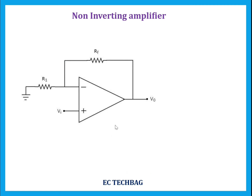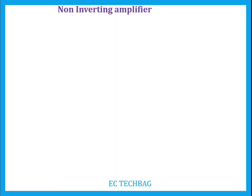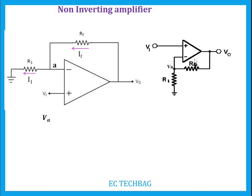Next, let us derive the output expression for this non-inverting amplifier. You can redraw this circuit as follows: the feedback resistor Rf is connected to the output terminal, and the other end of Rf is connected to resistor R1. The other end of R1 is connected to ground. The node A, where Rf and R1 are connected, is connected to the inverting terminal of the operational amplifier. The potential at this node is Va.